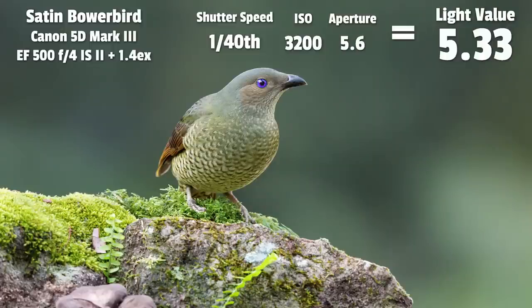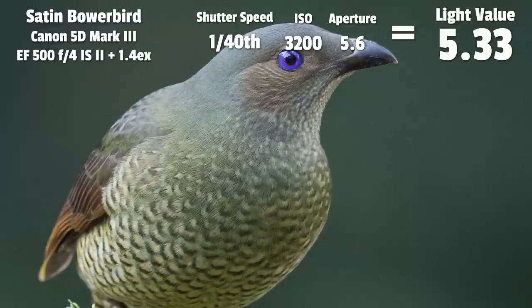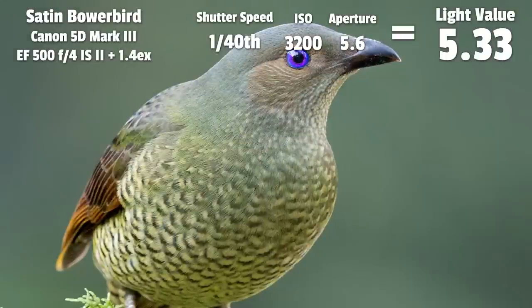Here is an example of a satin bowerbird taken with a light value of 5.33, which is very low. I ended up using a very low shutter speed of 1/40th of a second, giving me an ISO of 3200. Looking at a 100% crop of the raw image you can see how much noise is present, but after processing you can't really even notice it. In these dark scenes it's a balance between shutter speed and ISO — lower shutter speeds mean less noise because your ISO can be lower, but higher shutter speeds introduce more noise.